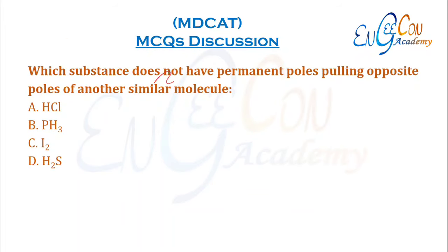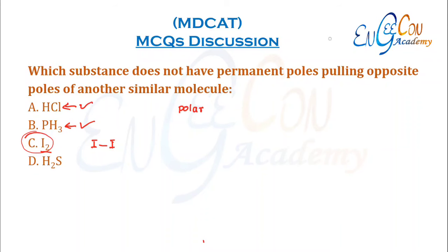Which substance does not have permanent poles pulling opposite poles of another similar molecule? This means which molecule is not polar. HCl is a polar molecule. PH3 also has a lone pair, so it is polar. I2 contains two identical atoms bonded to each other, so it is a non-polar molecule.